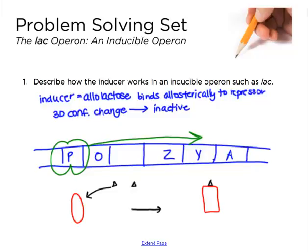Another term you may need defined is allosterically. Allosteric binding means binding at a different place. Enzymes have an active site where they bind their substrate. In this case, the repressor protein has an active site for the DNA at the operator. An allosteric site is somewhere away from this active site, so allolactose binds somewhere other than the active site but still affects binding because it changes the 3D conformation.